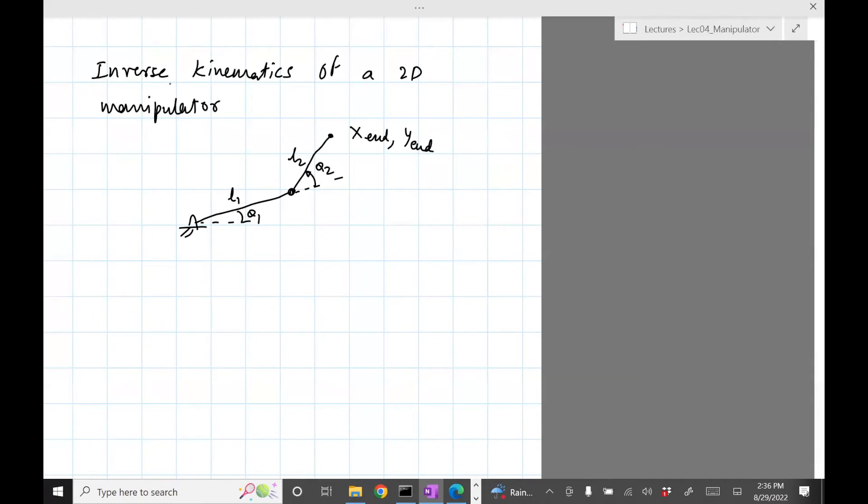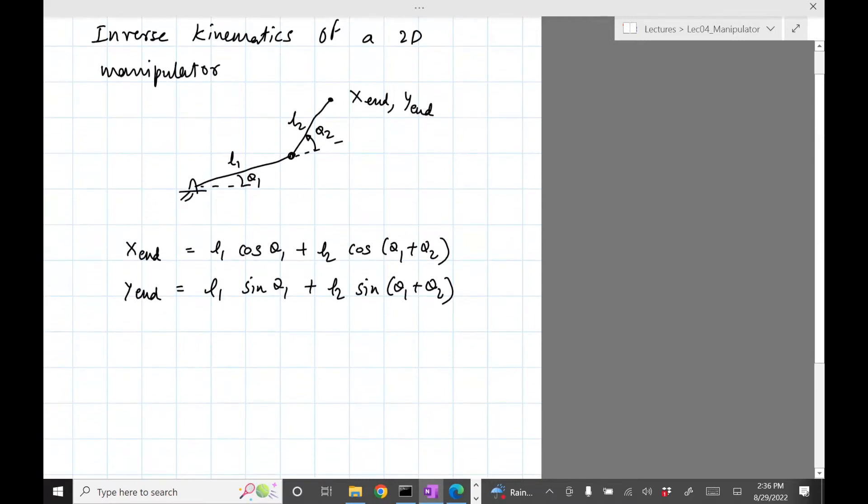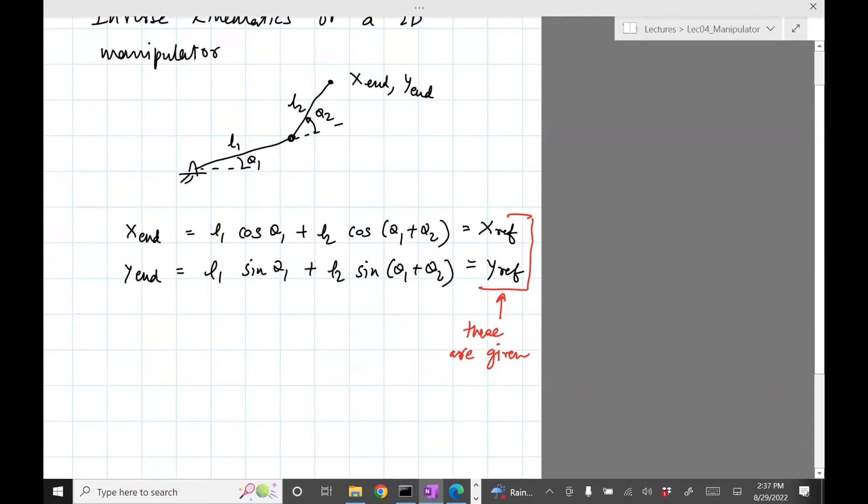Previously we developed an expression for x and y. I'm just going to put it down here: x_end equals l₁ cos(θ₁) + l₂ cos(θ₁ + θ₂), and y_end is l₁ sin(θ₁) + l₂ sin(θ₁ + θ₂). Now when we want the manipulator to be at a particular location, we specify x and y. Let's say that this is x_ref, y_ref, where these things are given.